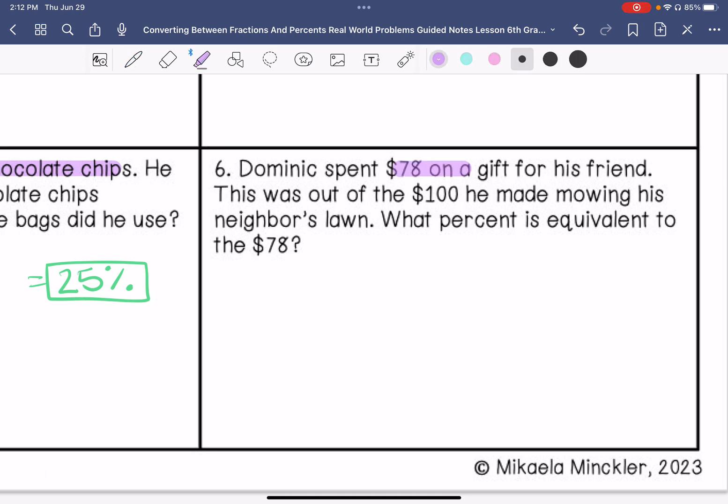Dominic spent $78 on a gift for his friend. This was out of $100 he made mowing his neighbor's lawn. What percent is equivalent to $78 out of that 100? So it's 78 out of 100. I don't have to multiply or divide by anything. That was just 78 percent.